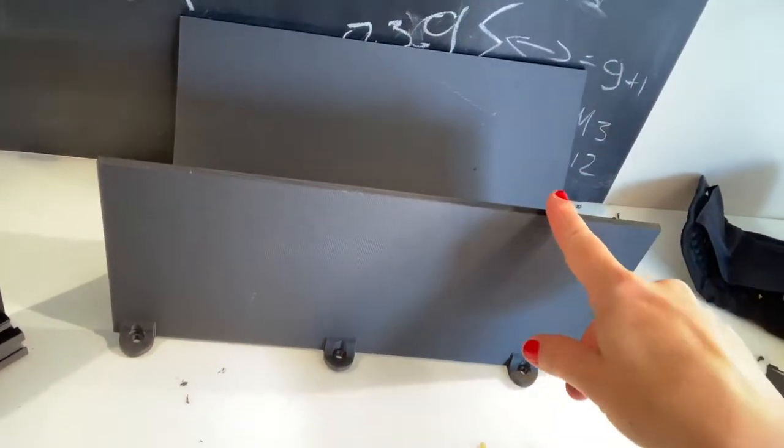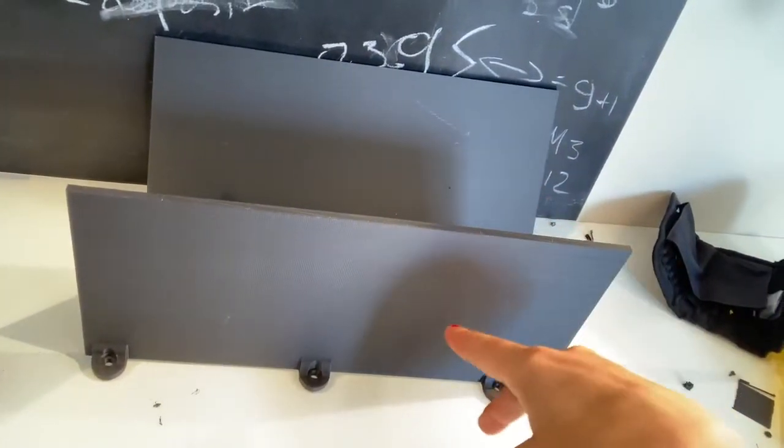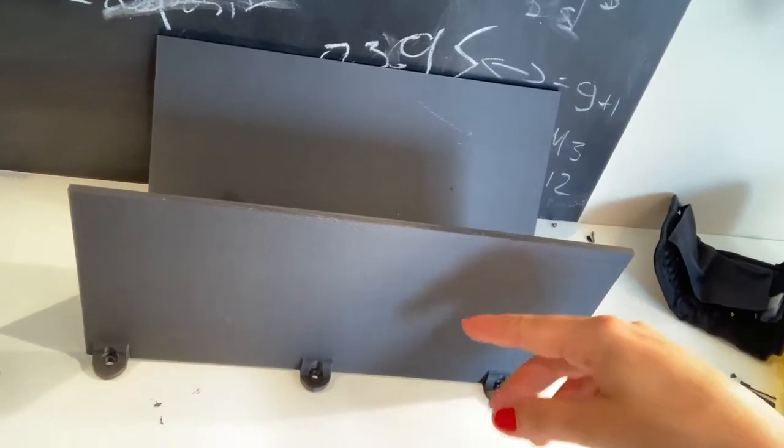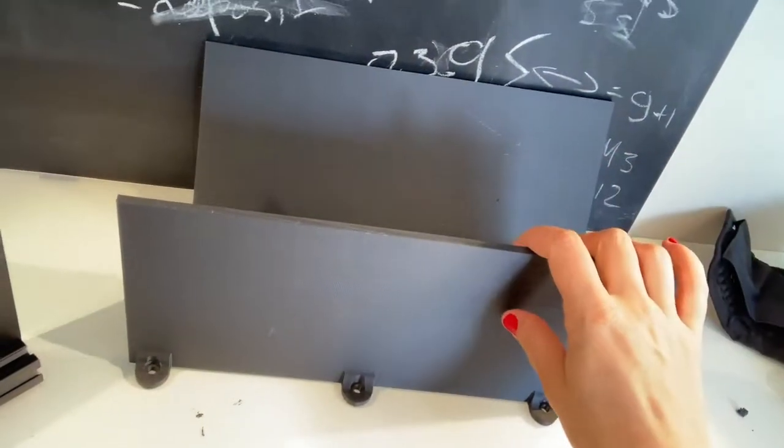Next thing to assemble is the screen. It's printed with supports and contra forces that should be removed prior to putting the screen on aluminum profile.